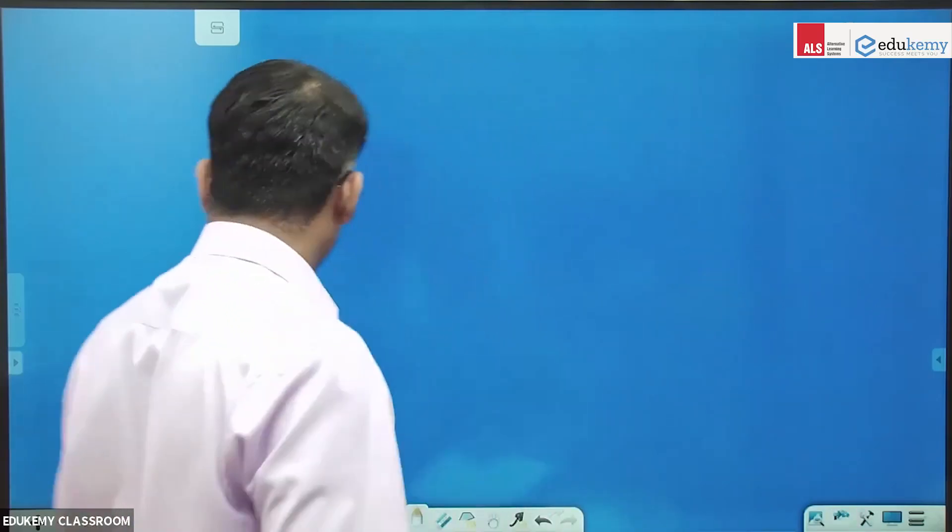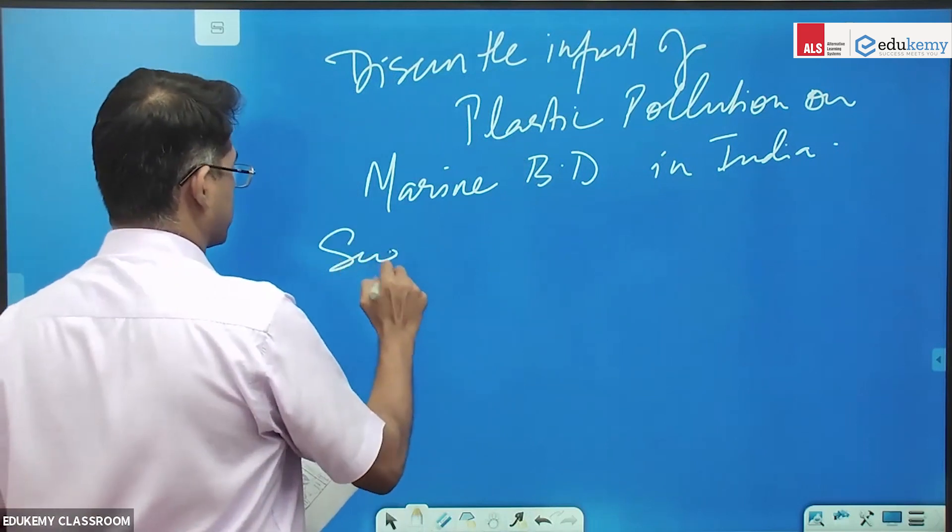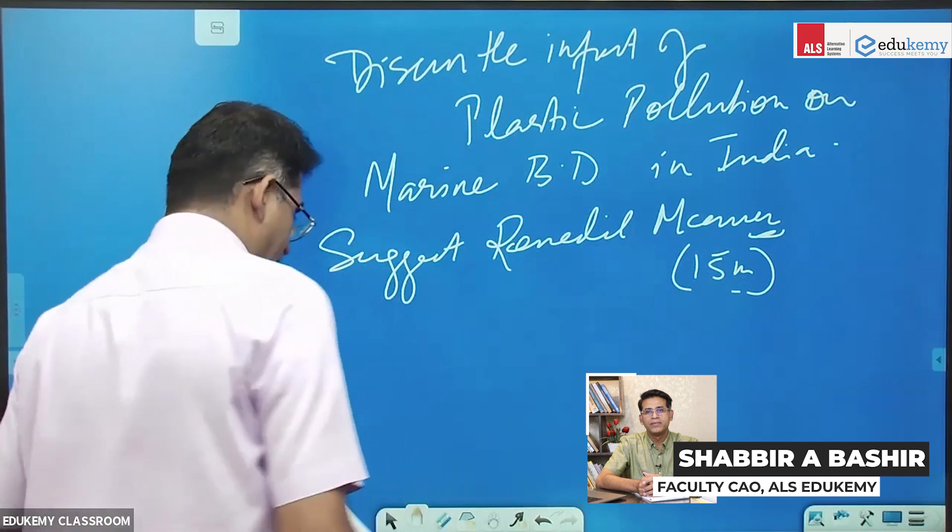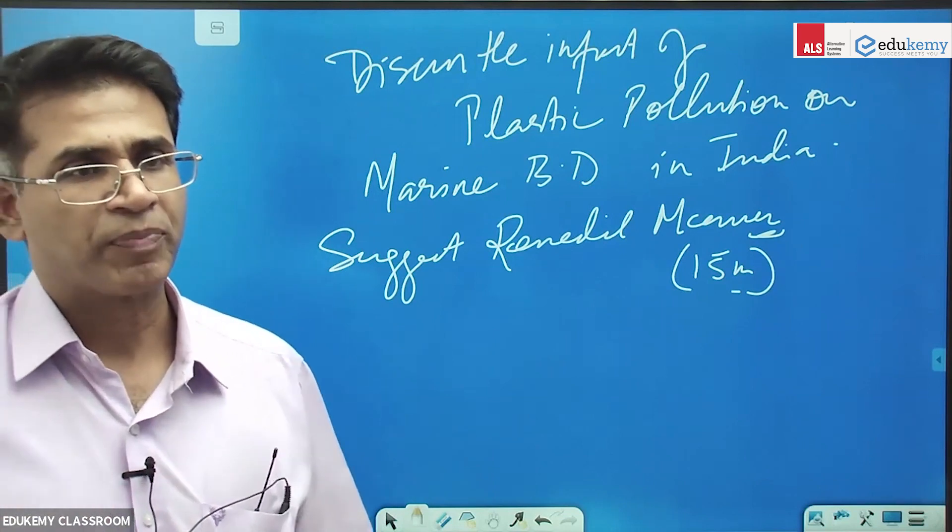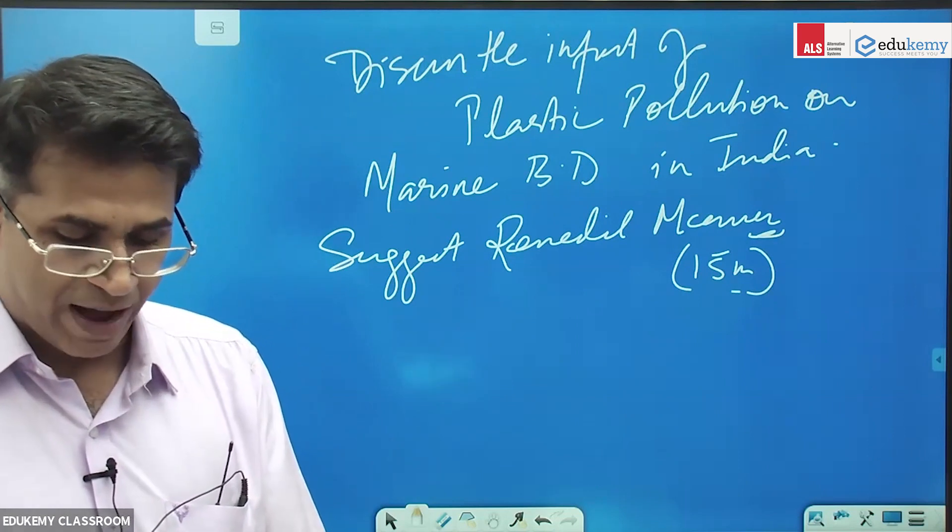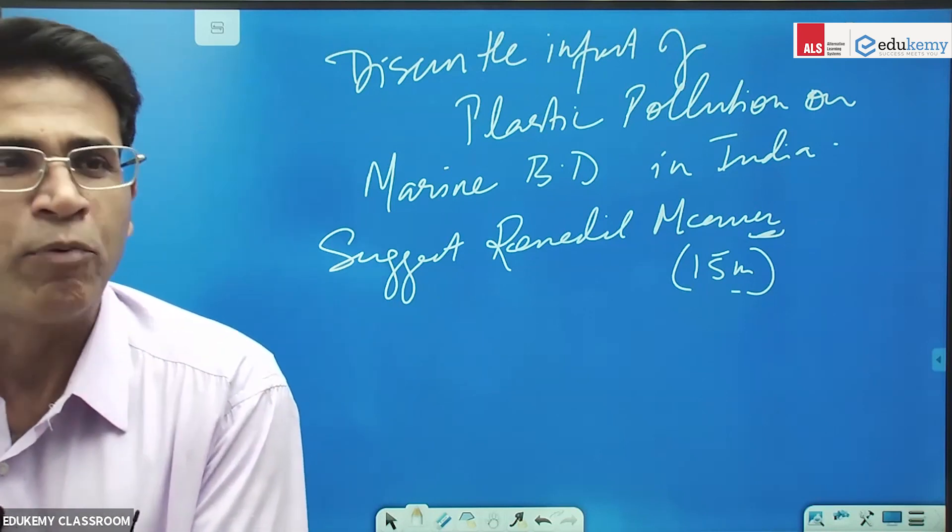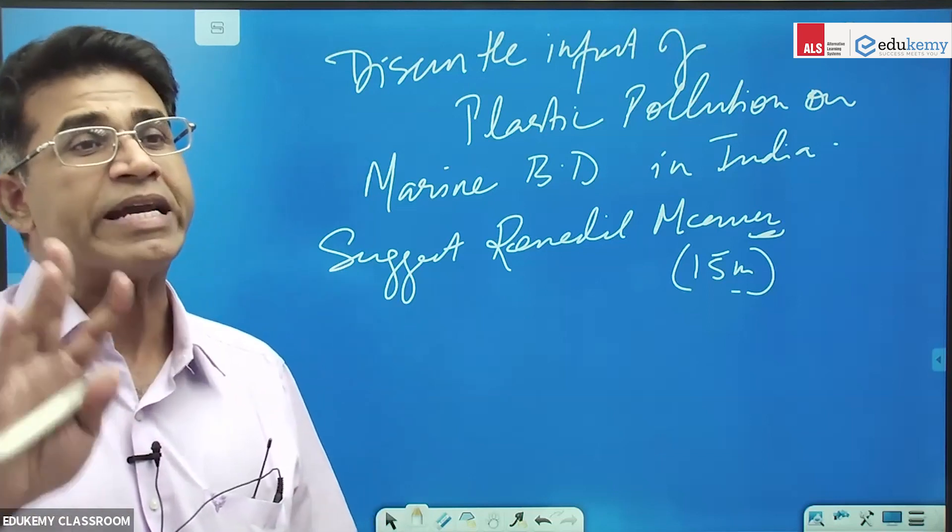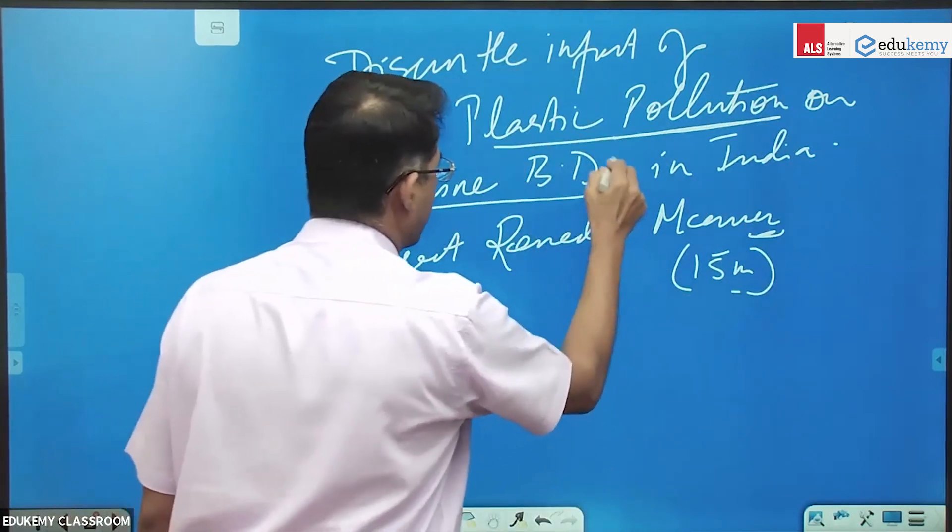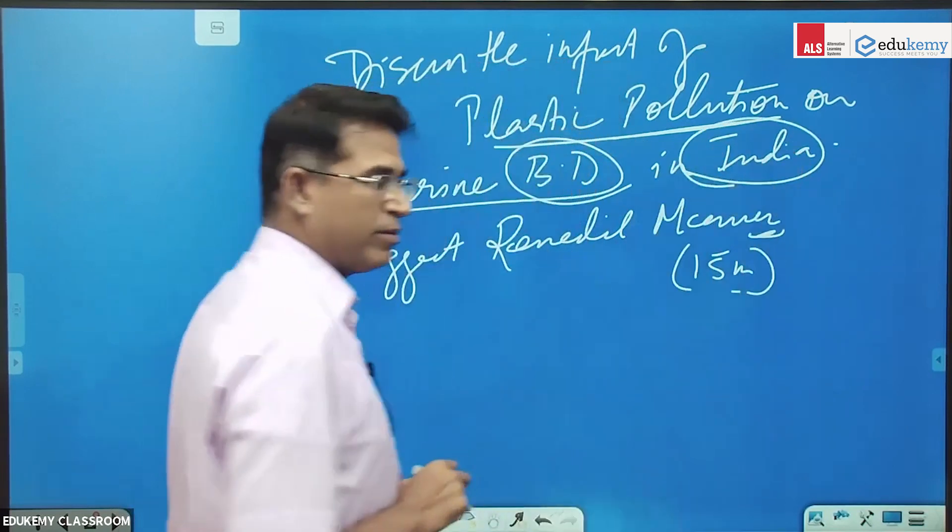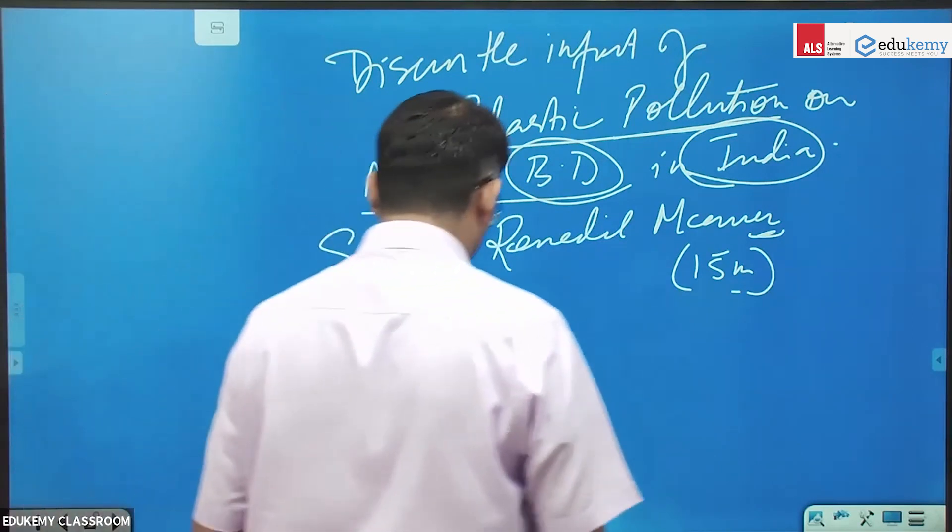Discuss the impact of plastic pollution on marine biodiversity in India and suggest remedial measures. See, my objective is these kinds of answers should be written with some amount of thinking on your own. I'll give data also - we have a proper answer with data, facts, examples, some details - but if they ask this to you without you being ready for it, you have to try to answer on your own.